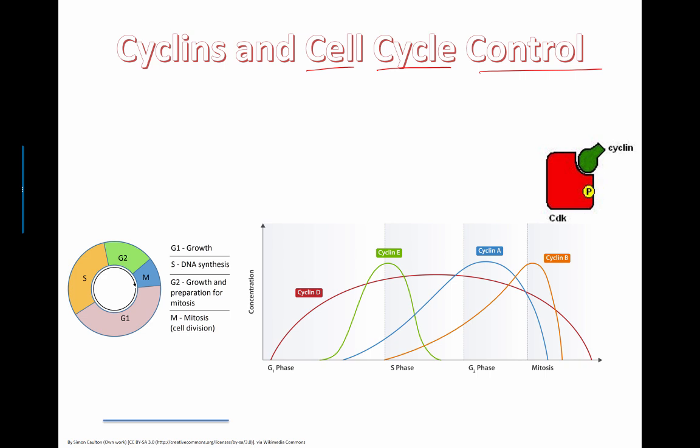Okay, here we're going to take a look at something called cyclins and how they're involved in the control of the cell cycle. You should know already about the different stages of the cell cycle in general. They're separated into G1, S, G2, and M.